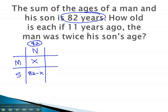The next column, we fill in by the change in time, 11 years ago. Subtracting 11 from each cell gives us x minus 11, and 82 minus 11 is 71 minus x.